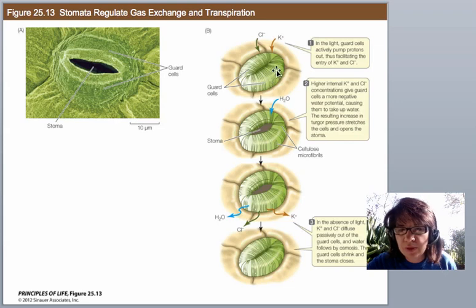So here's our guard cells. In the light it says that the guard cells are actively pumping protons out thus encouraging those ions potassium and chlorine to come in. The higher potassium and chlorine concentrations give guard cells a more negative water potential causing them to take up water. You want to go to the negative side and then they get puffy. Turgor pressure makes them pop open and make a pore.